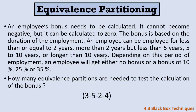The four partitions are: zero to two years, two to five years, five to ten years, and longer than ten years. Depending on the period of employment, an employee gets either no bonus, 10%, 25%, or 35%. So zero to two years gives no bonus, two to five years gives 10%, five to ten years gives 25%, and more than ten years gives 35%.